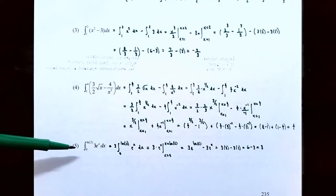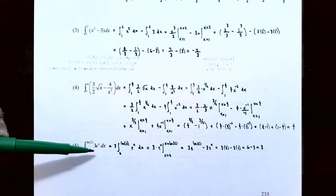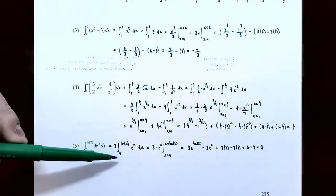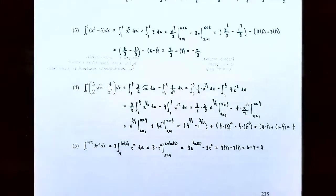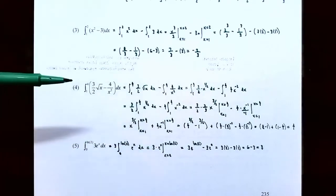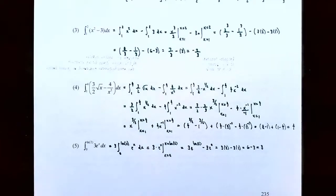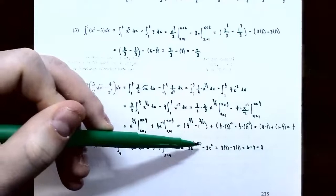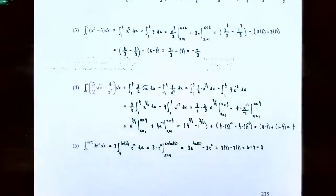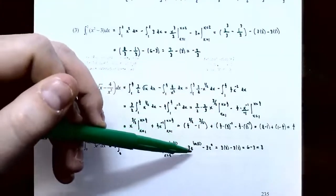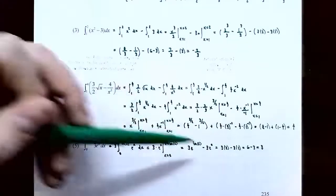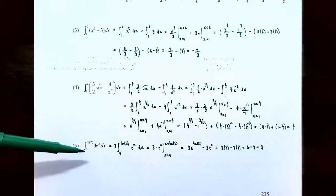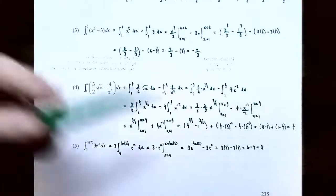Number five, find the definite integral from x equals 0 to x equals natural log of 2 of 3 times e to the x dx. Take 3 outside using the constant multiple property: 3 times the integral from 0 to ln 2 of e to the x dx. The antiderivative of e to the x is also e to the x, so evaluate: 3 times e to the natural log of 2 minus 3 times e to the 0. Since e and natural log are inverses, e to the ln 2 equals 2, and e to the 0 is 1. So 3 times 2 minus 3 times 1 gives 6 minus 3, which is 3.